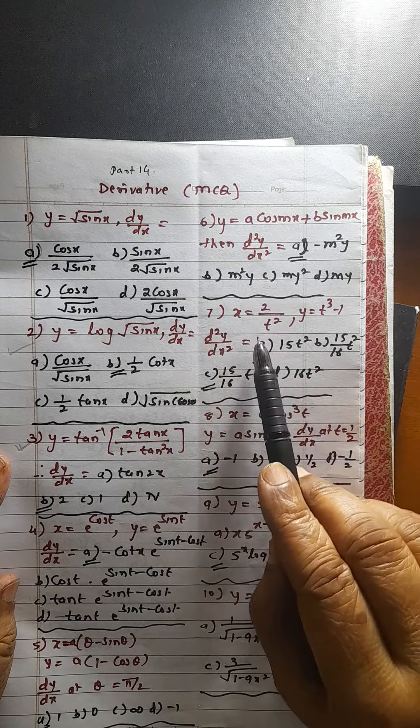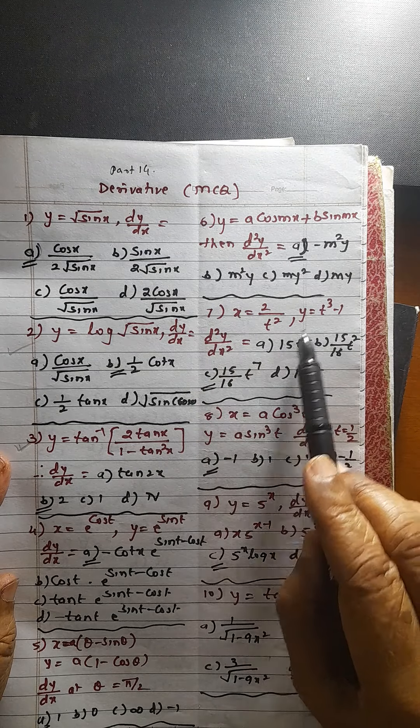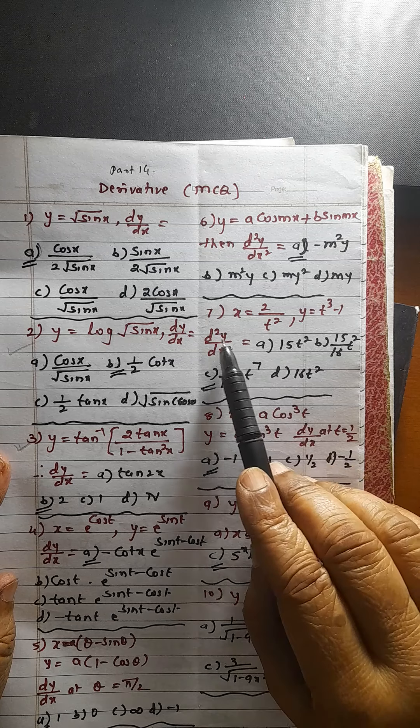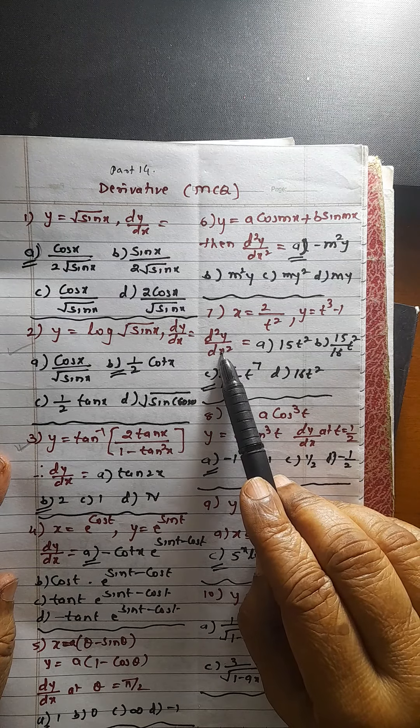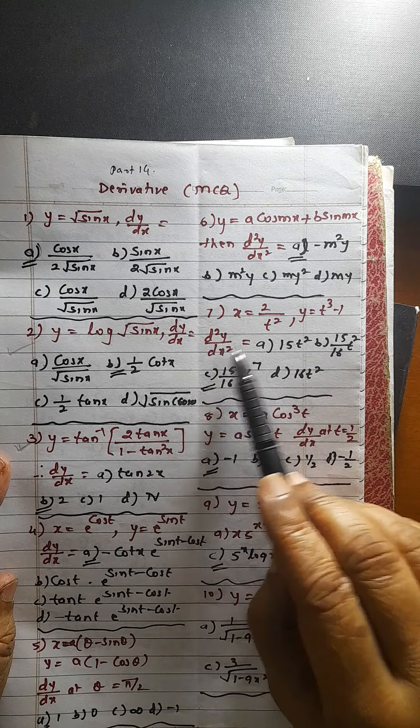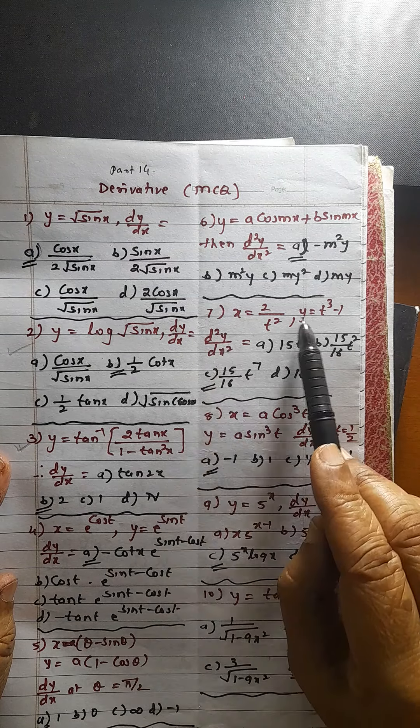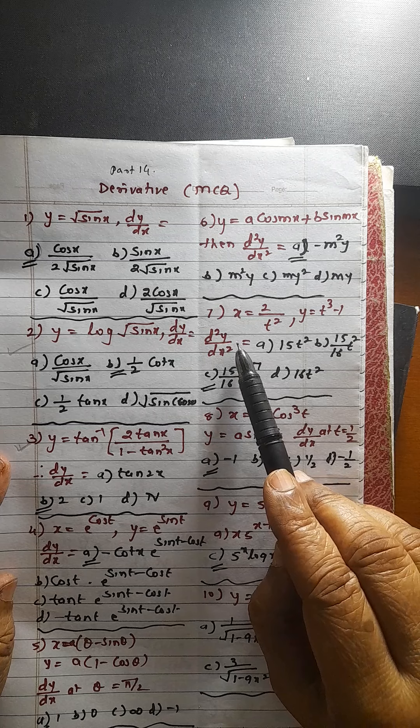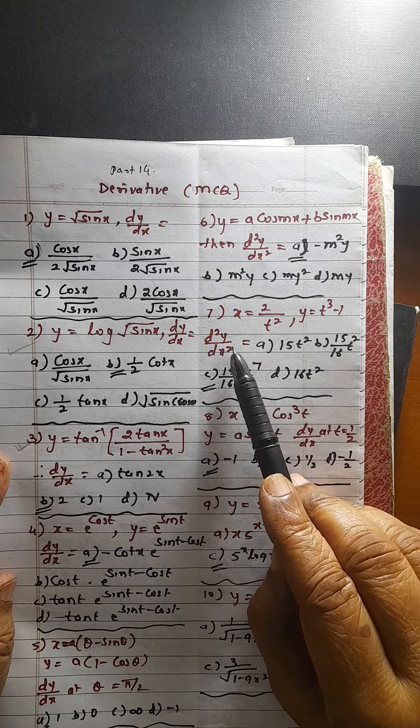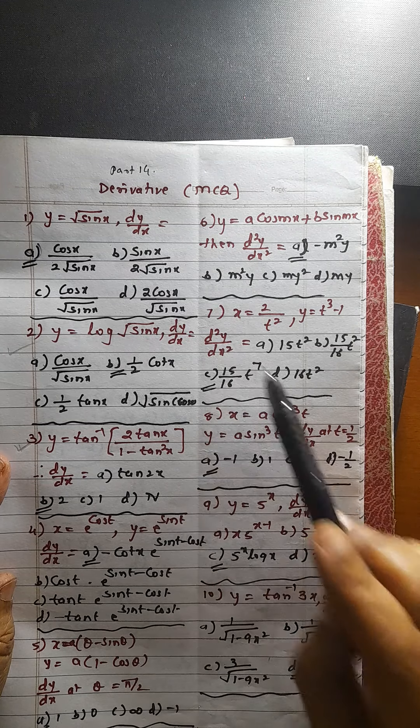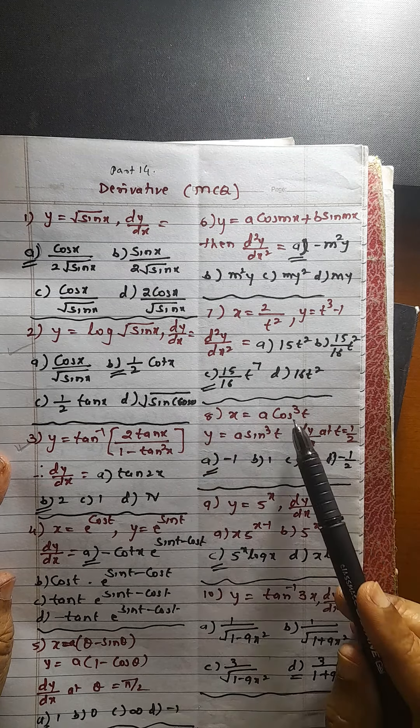Second to twice you differentiate. This is parametric functions. So you know how to find out d square y by dx square. It is second time you be careful. Dy by dt you find out. Dx by dt you find out. Dy by dx you find out. And be careful about finding this. This is also parametric function. You can solve it.